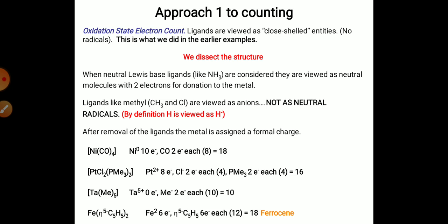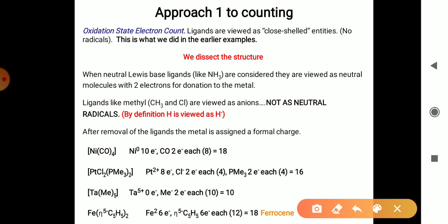2 electrons of each carbonyl ligand are given to the nickel central metal, and the total is 18. Because 4 ligands are present, so 2 times 4 is 8, and nickel has 10, so 10 plus 8 equals 18. This molecule obeys the 18 electron rule.